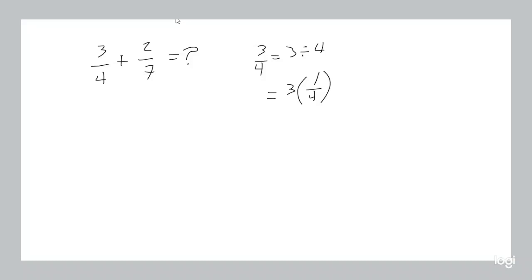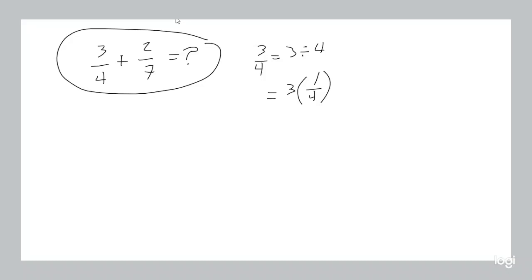So adding or subtracting numbers with a different denominator — how do we do that? Well if it's the same denominator it's easy: we just add the top and keep the bottom the same. With a different denominator, we want to make the denominator the same. And here's how we do that.